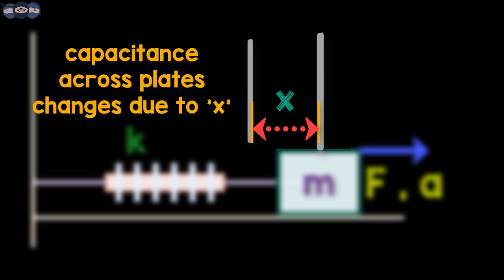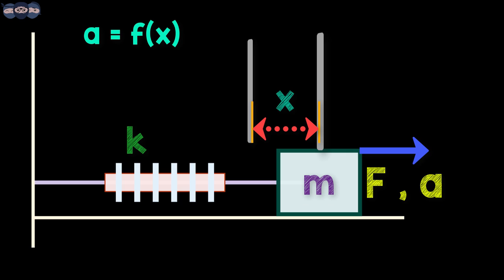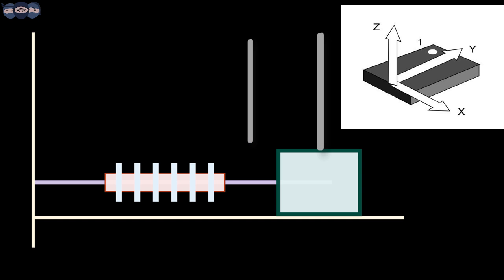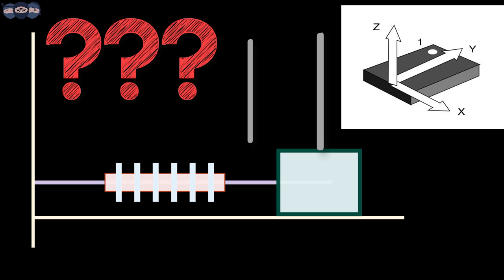Due to x, the capacitance C across the fixed and movable plates change. By measuring this C, we can calculate the value of x which helps us to infer the value of acceleration. This is the principle of measuring the acceleration. However, one cannot employ such a huge and big spring mass system inside an accelerometer IC. This is where MEMS come into play.